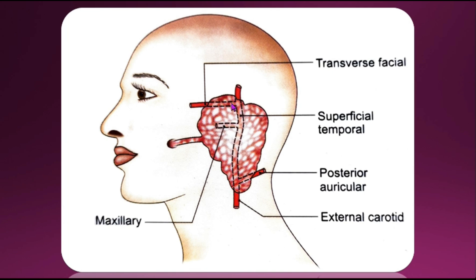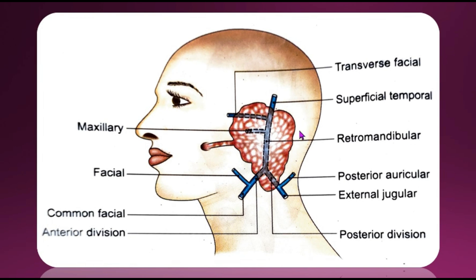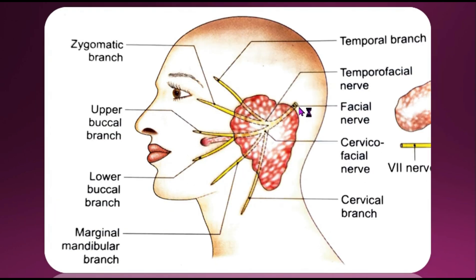Looking at the veins, the retromandibular vein is formed within the gland by the union of the superficial temporal and maxillary veins. In the lower part of the gland, the vein divides into anterior and posterior divisions which emerge close to the apex of the gland.